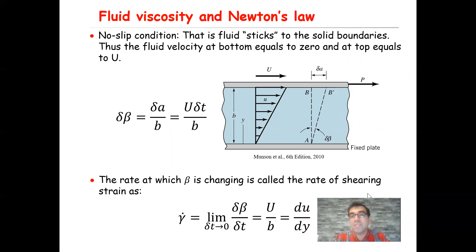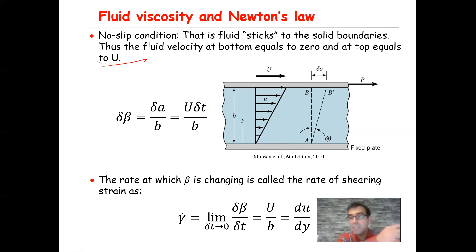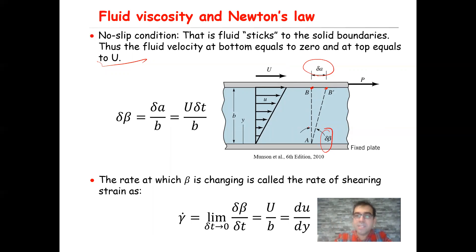The no-slip boundary condition basically means that the fluid sticks to the solid boundaries. Since the bottom plate is fixed, the velocity there is equal to zero. At the top, the velocity will be equal to U, because that plate is moving with constant velocity U. So here the fluid at point B, since the plate is moving, point B is moved to point B prime. The distance between these two is represented by delta A, and we represent this angle by delta beta.